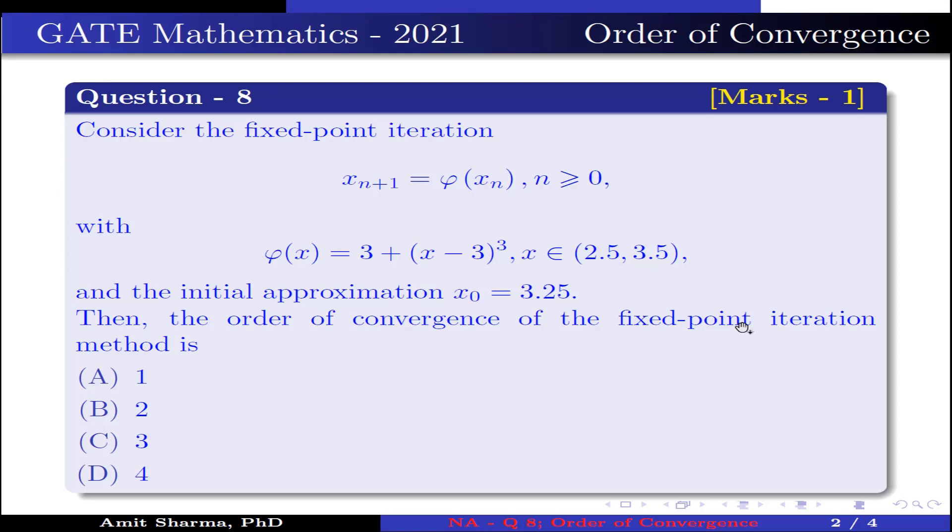Then the order of convergence of fixed point iteration method is: option (A) 1, option (B) 2, option (C) 3, option (D) 4.